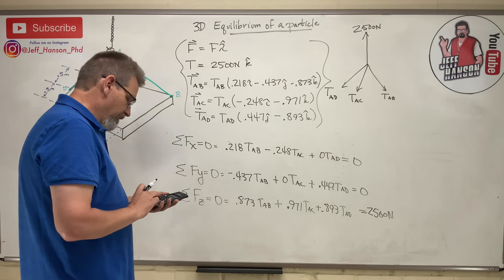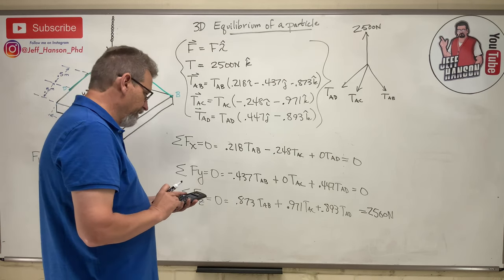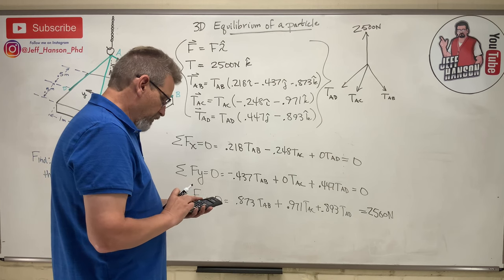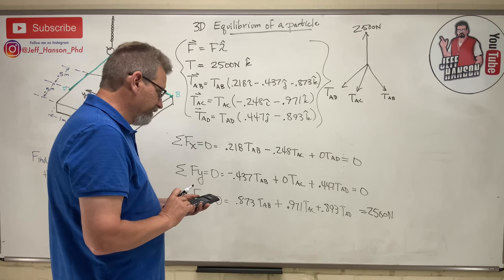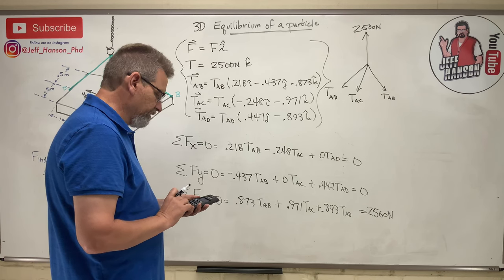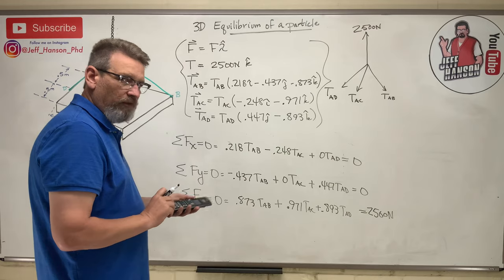All right, next line. 0.873, enter. 0.971, enter. 0.893, enter. Enter. 2,500, enter. All right, here comes solve. Bam!